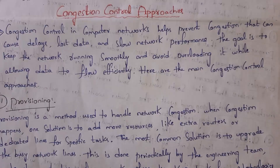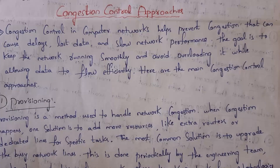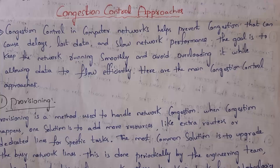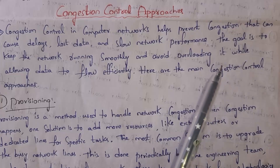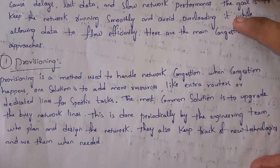Whenever multiple computers send data at the same time in a network, there is a huge amount of data in the network which will cause a traffic jam. So congestion is nothing but a huge amount of data in the network which causes a traffic jam. Congestion will cause delay — that is, data will reach the receiver very slowly — and sometimes there is loss of data. Network performance will also decrease due to congestion. By using various congestion control approaches, we can prevent congestion, keep our network running smoothly, avoid overloading, and allow data to flow efficiently.